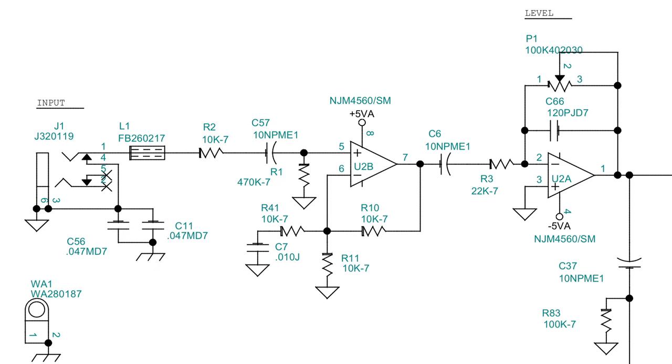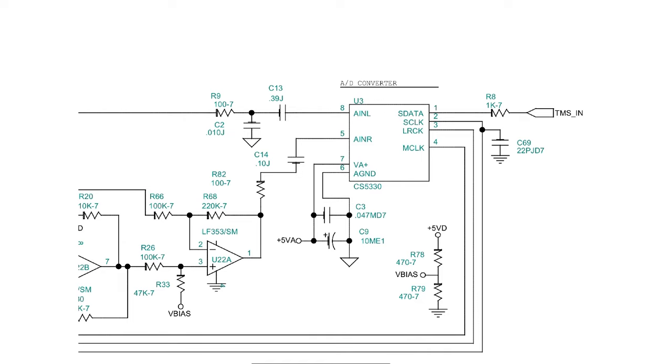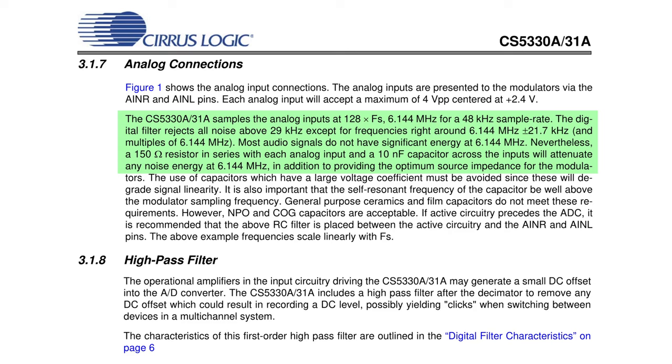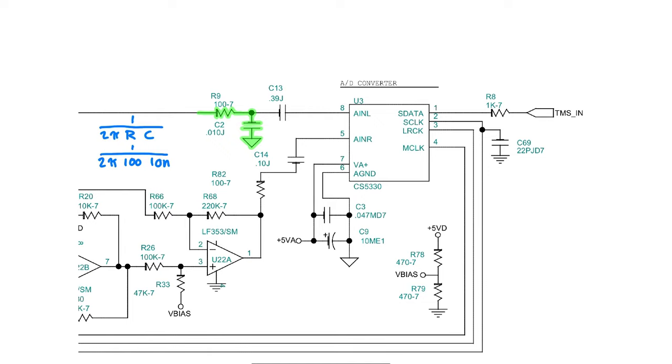At this point, we've amplified and filtered the input signal. Since this is a digital effects pedal, the next step is to digitize the signal so we can process it digitally. That's done by this analog-to-digital converter, or ADC chip. The audio it digitizes is then sent to the DSP chip. Before entering the ADC chip, the audio signal goes through one more filter. The ADC's digitization process can be distorted by noise at very specific high frequencies. We're talking megahertz here. This simple RC low-pass filter has a cutoff frequency of 159 kHz, and effectively removes the frequencies the ADC is sensitive to.